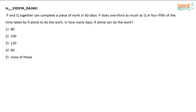I am going to solve this with the unitary method. For each question I always say this — I won't say always follow the unitary method or always follow the LCM method or efficiency method. Whichever method suits the problem, use that. So here I am going to go with the unitary method. P and Q together can complete a piece of work in 60 days, or in one day P and Q can complete 1/60th of the work. Now, P does 1/3 as much as Q in 4/5 of the time taken by R.